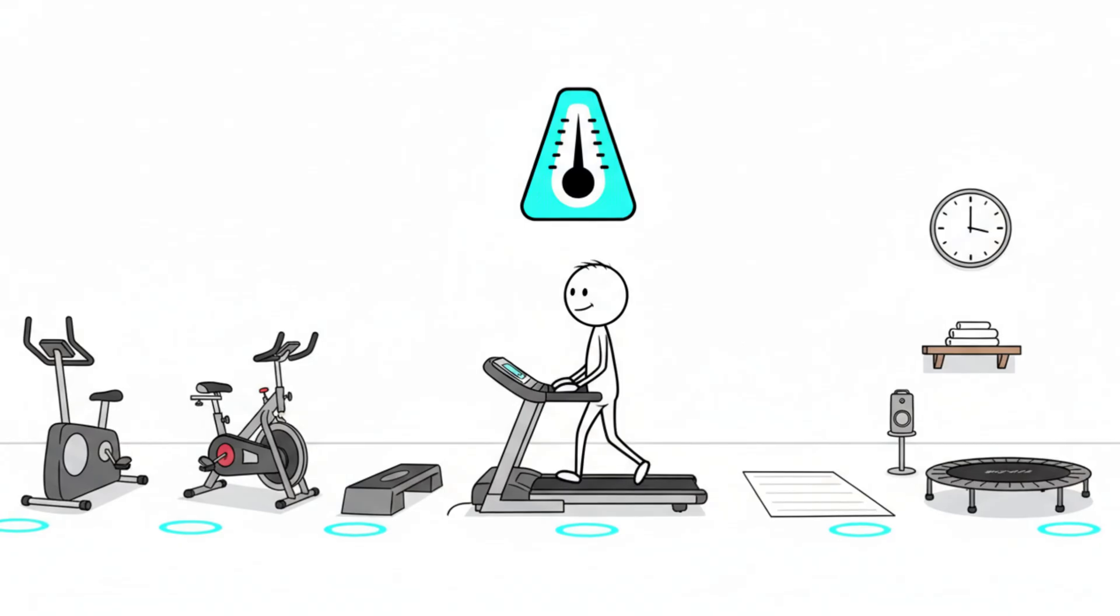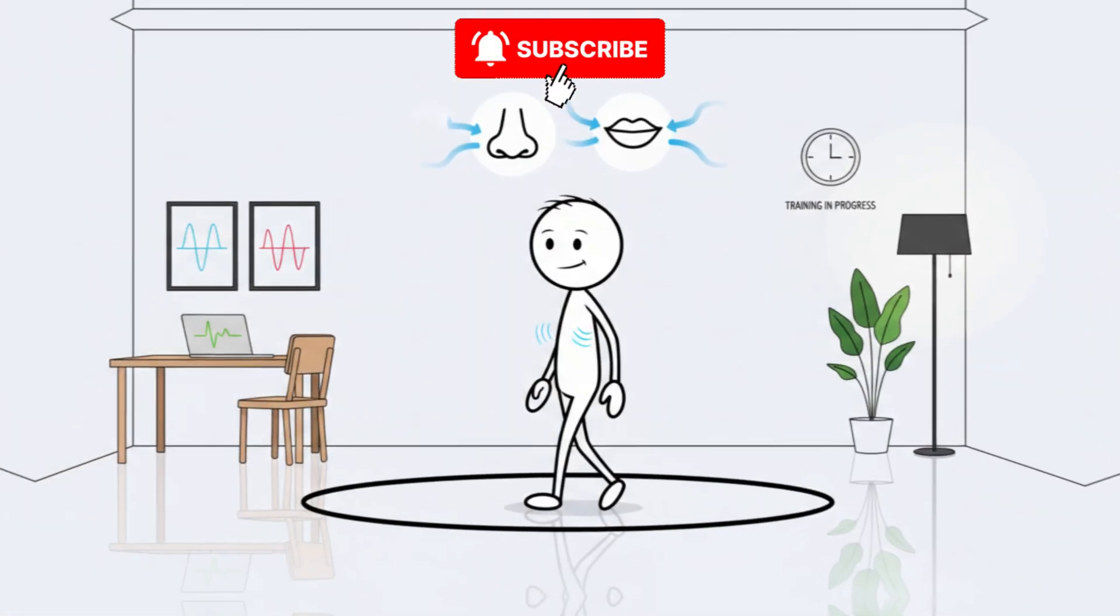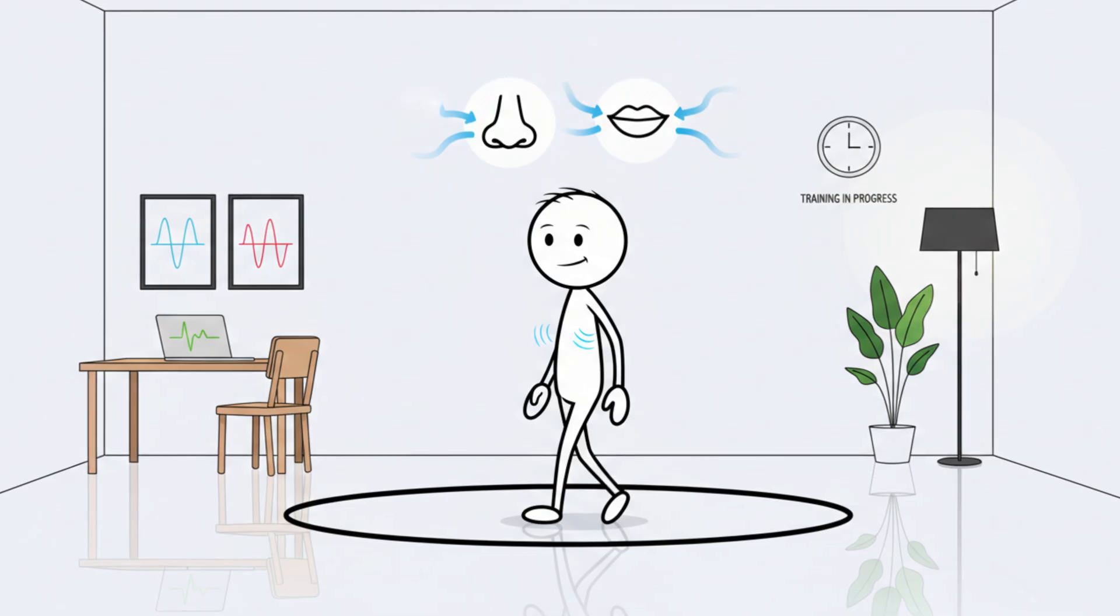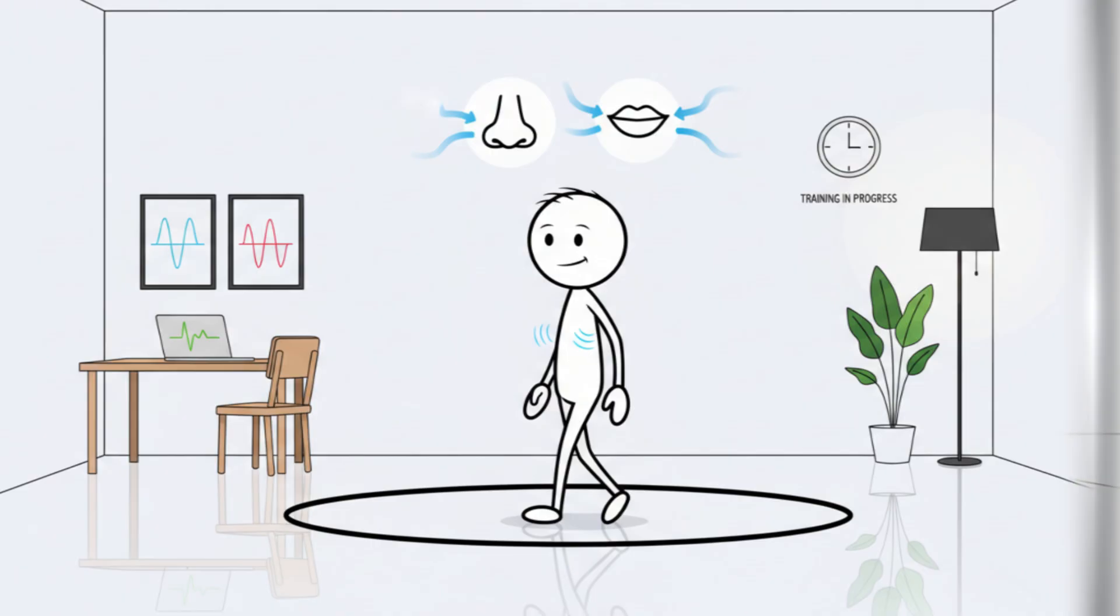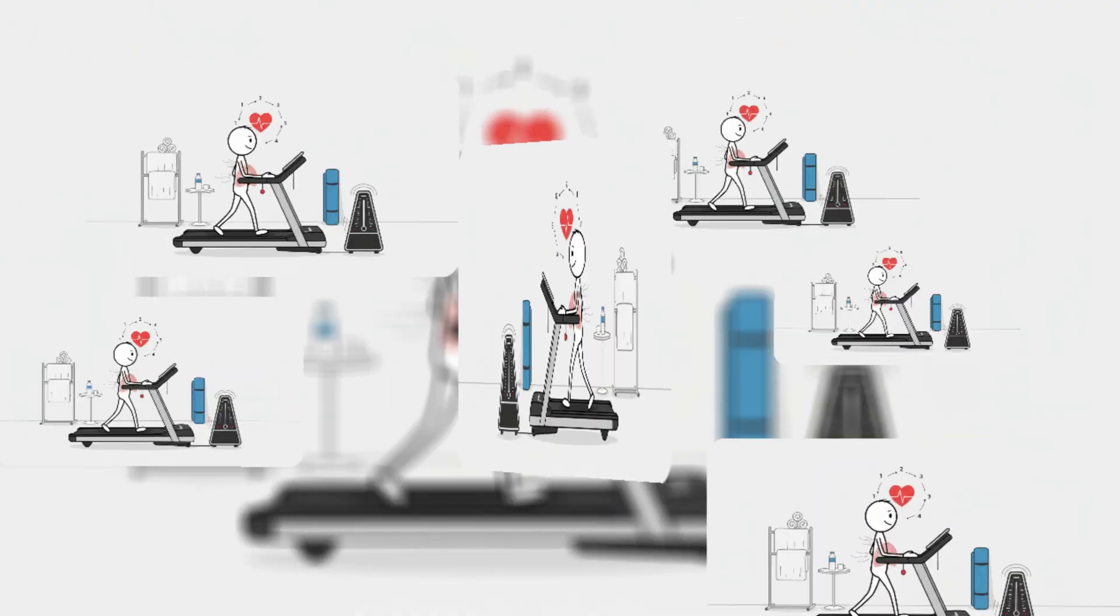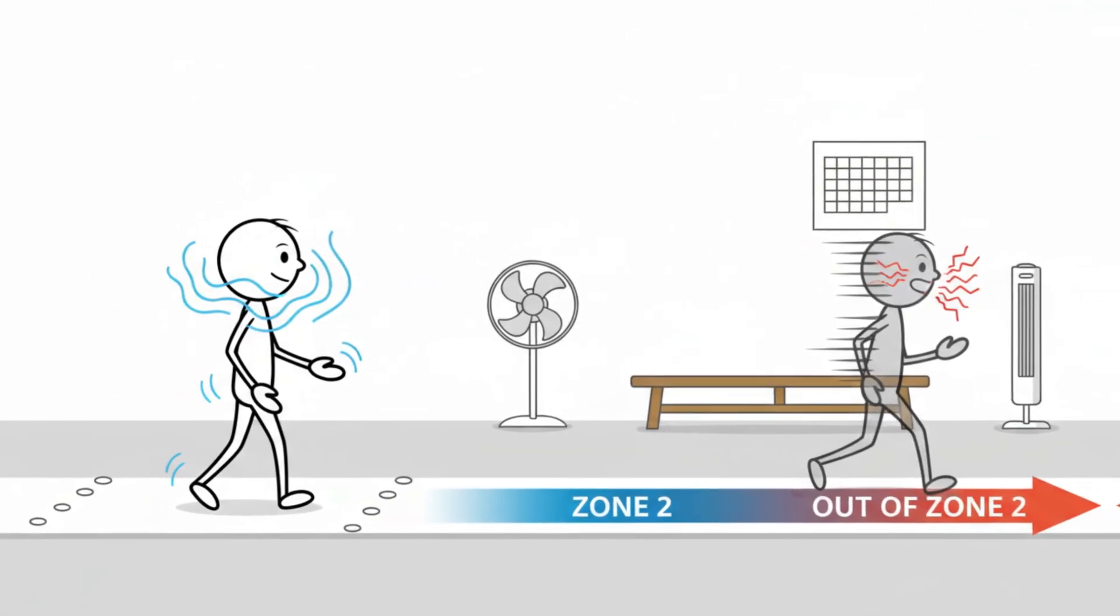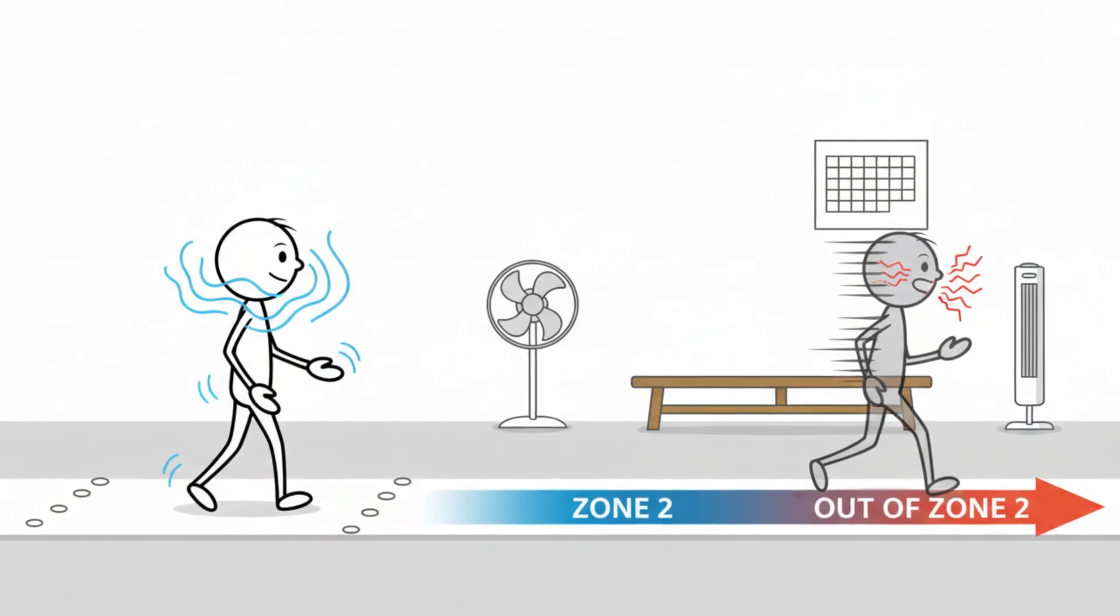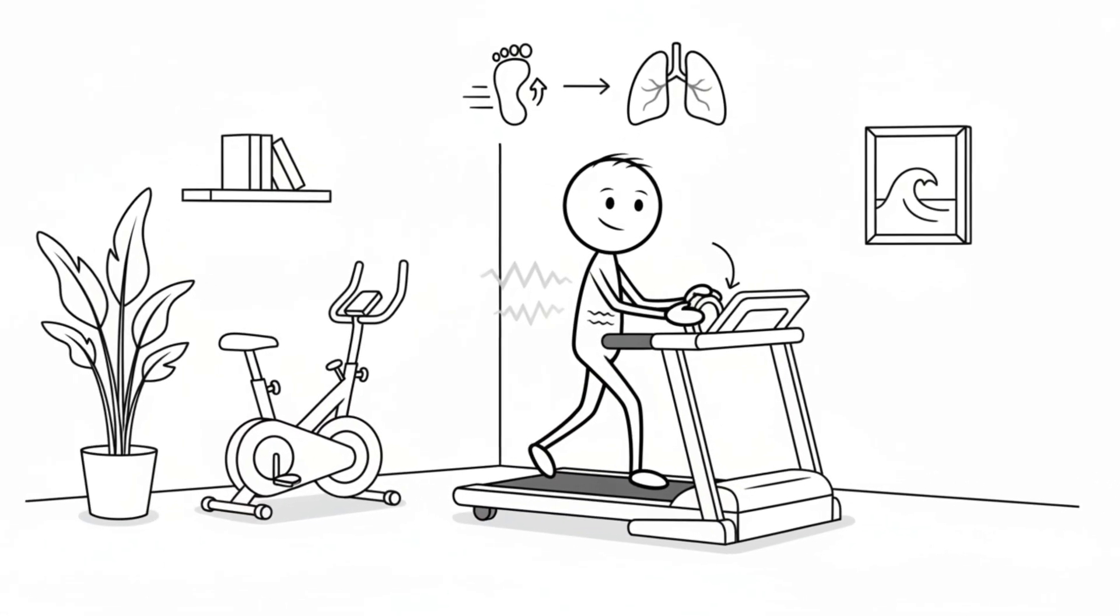A surprisingly effective trick to stay inside Zone 2 is to anchor your pace to your breathing pattern. Researchers studying endurance athletes found that stable nasal or controlled oral breathing helps regulate intensity and avoid accidental spikes. When your breathing stays smooth, your heart rate usually follows. Try breathing in for two counts and out for two or three. This simple rhythm encourages a steady aerobic pace. If you notice the urge to breathe faster, it's a sign you're creeping out of Zone 2. Adjust your movement instead of forcing your breath.